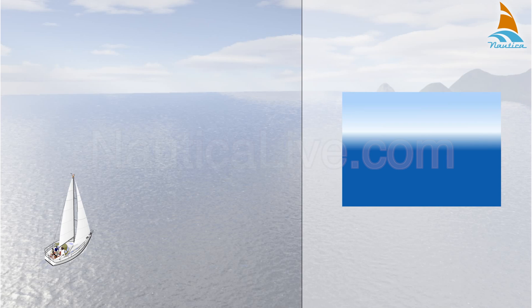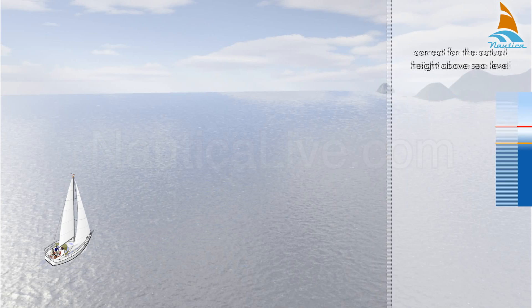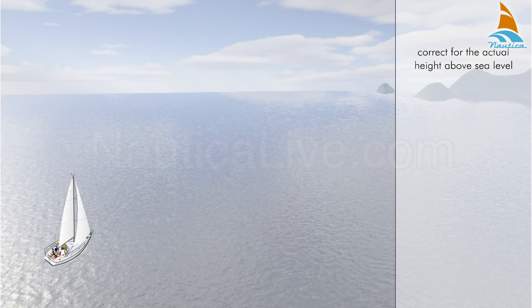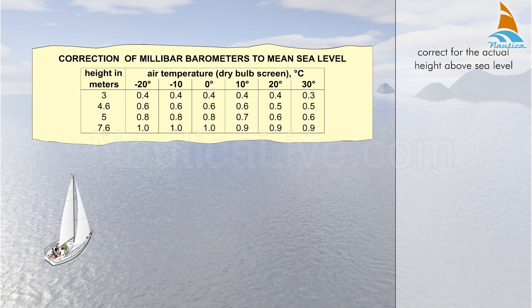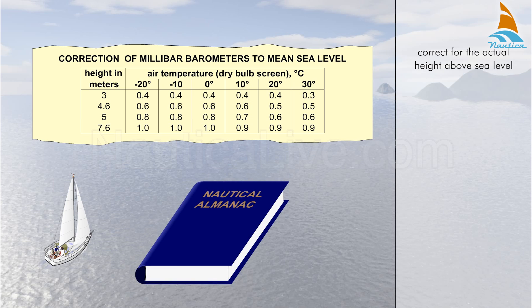Because the air is denser at sea level than at higher altitudes, you must also correct for the actual height above sea level. Use the table 'Correction of Millibar Barometers to Mean Sea Level' for the altitude correction. This table is available in the Nautical Almanac.